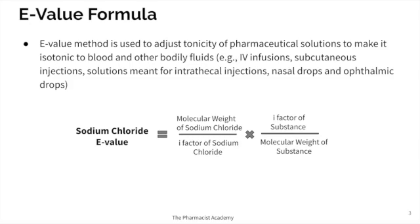The E value is a method used to adjust the tonicity of pharmaceutical solutions in order to make them isotonic with the blood and other bodily fluids — whether it's an IV infusion in a bag, subcutaneous injections, solutions meant for intrathecal injections, nasal drops, or ophthalmic solutions.